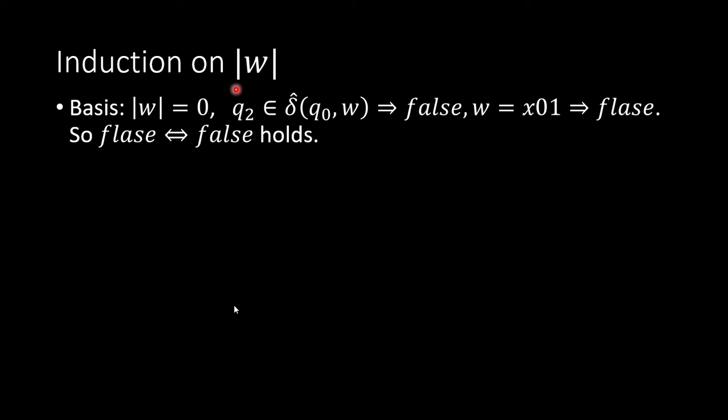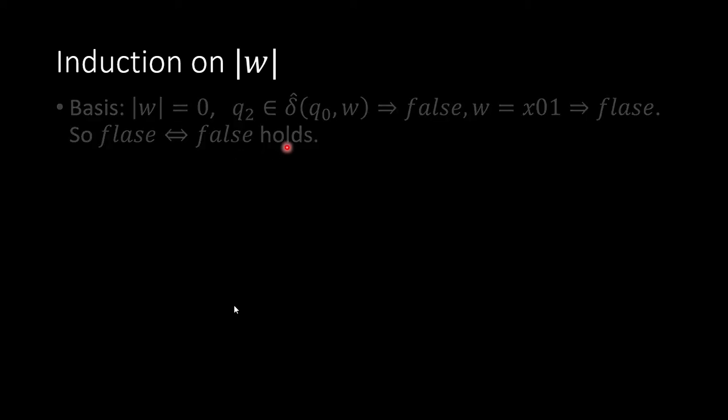So the basis is, if the length of w is 0, that means empty string, and then q2 in δ̂(q0, w). δ̂ is a transition function that takes a string, and w. In this case, this string is empty string, and obviously this is false. q2 is not going to be there because it stays at q0. And the right-hand side, w equal to x01, the empty string is not going to be ended by 01. So it's false. So we have false if and only if false. So the statement holds. That's the basis.